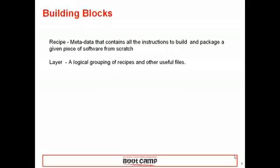Before we get started in explaining the different layers, two important keywords to discuss in case you're not familiar with Open Embedded. First, a recipe is metadata that contains all the instructions to build and package a given piece of software from scratch. A layer is a logical grouping of recipes and other useful files. Those are just very high-level definitions, but it's good enough for this presentation.